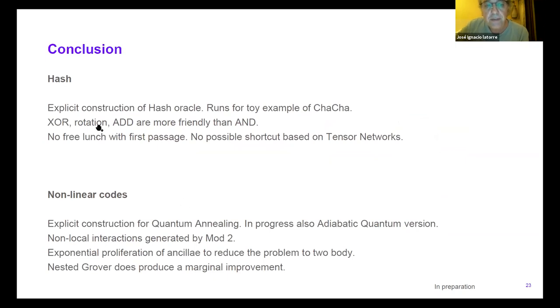So my conclusions is that we have analyzed a hash problem and nonlinear codes. On the first, we explicitly constructed every piece of the algorithms. And we discovered that control-not, rotations and adds are friendly to quantum mechanics, but AND-based hash algorithms would be much worse. We need many more ancillas. We found no free lunch on the first passage idea. And we found no way to use tensor networks to simulate the process. Under nonlinear code, we did the mapping to annealing. And we discovered that mod two is a big problem that generates multiple interactions. And then we reduce them to two-body interaction with ancillas. And we found a way, at least in this example, to find a solution. Nested Grover produced only a marginal improvement. And I think I've run out of time.